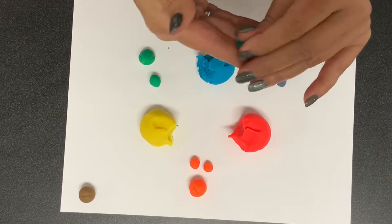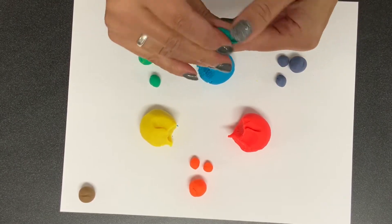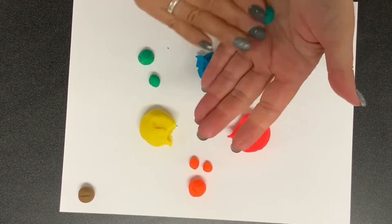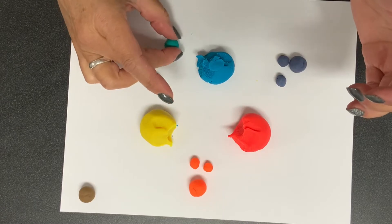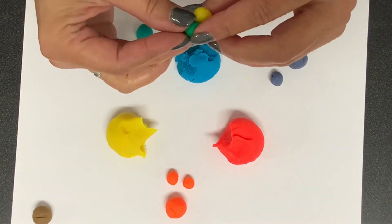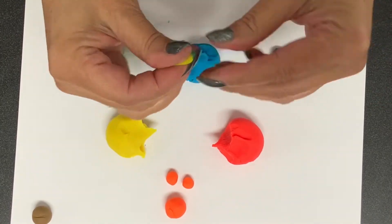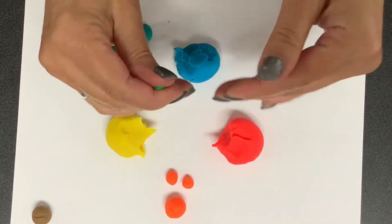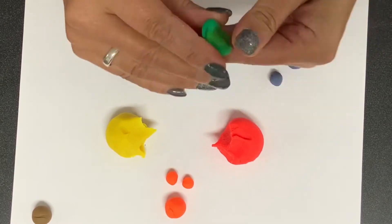So green and blue make blue green. That is a tertiary color. Then we're gonna move on and get a pea-sized amount of yellow. We're gonna mix yellow and green to create yellow green and that is also a tertiary color.